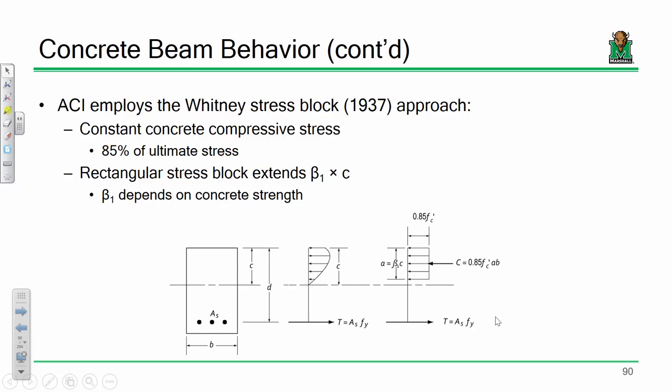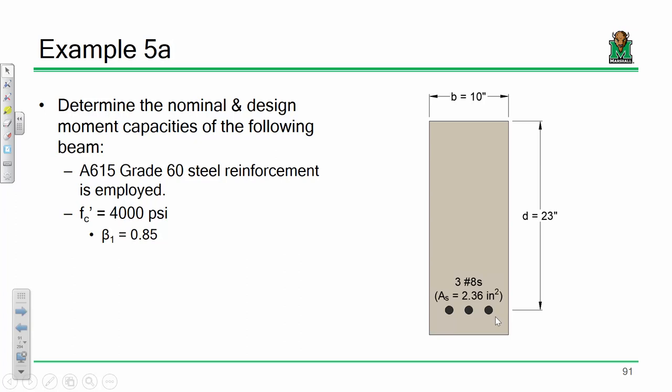We're going to look at Example 5A, which focuses on the mechanics and getting familiar with the maximum capacity approximations we use in concrete design. We're going to determine the nominal moment capacity and ultimately the design moment capacity of this beam. It's a beam that's 10 inches wide with an effective depth of 23 inches. I didn't tell you the overall height H, because the capacity has nothing to do with the height of the beam — it has to do with the effective depth.